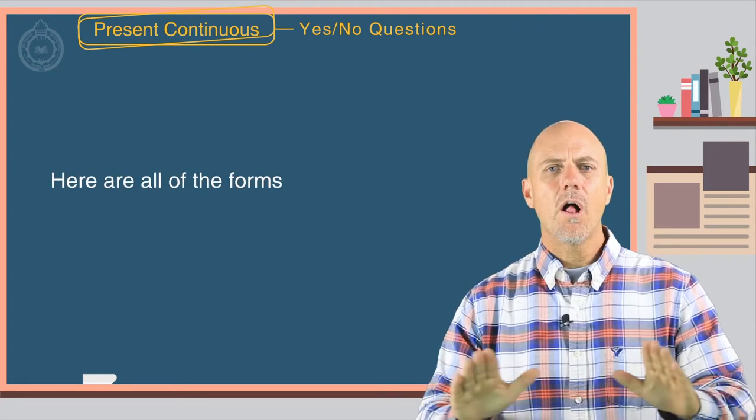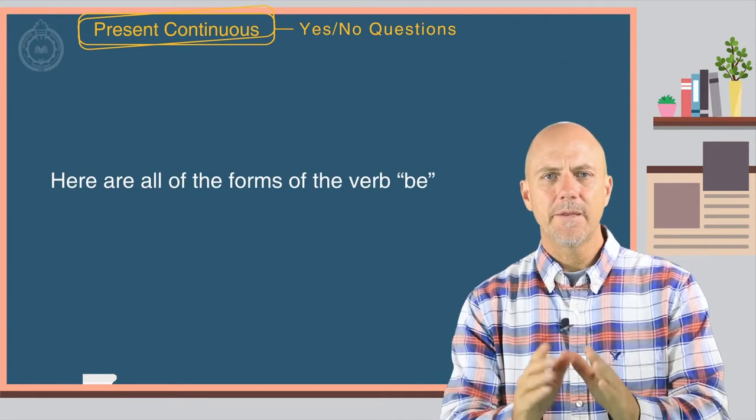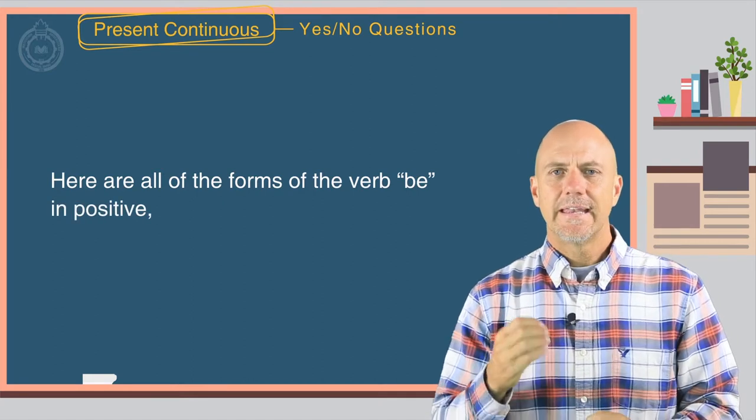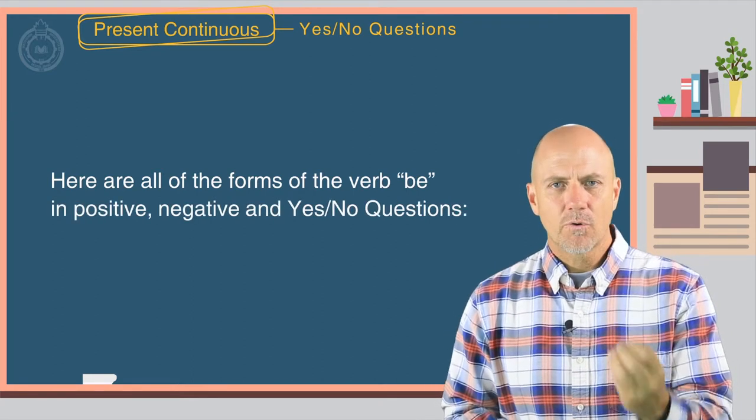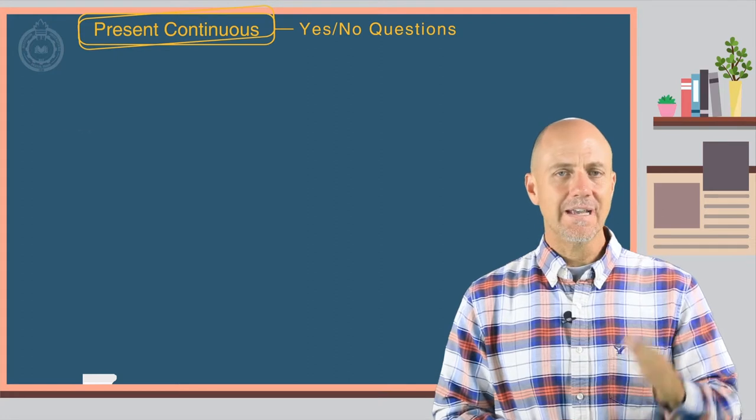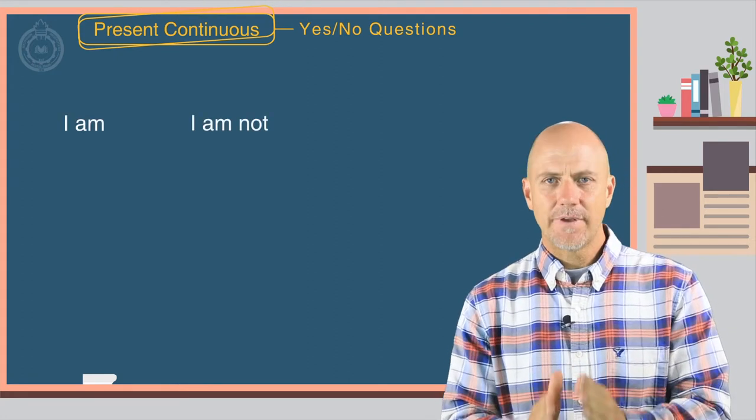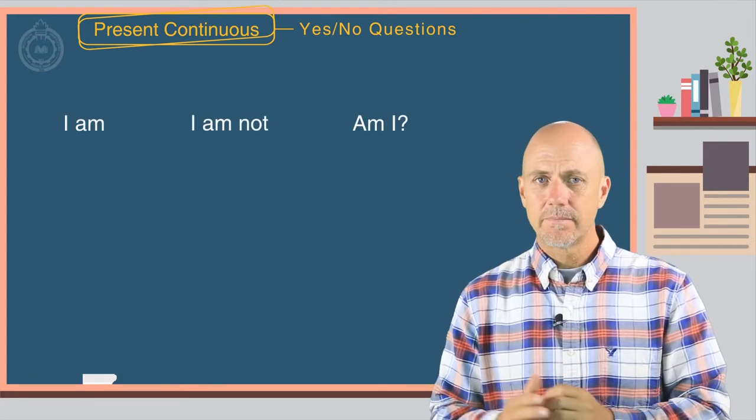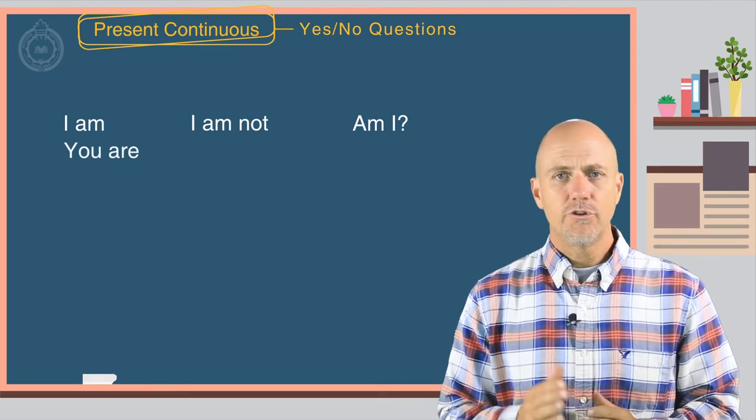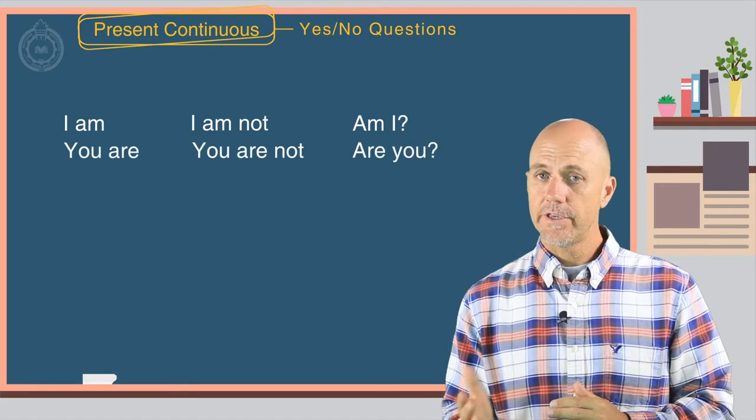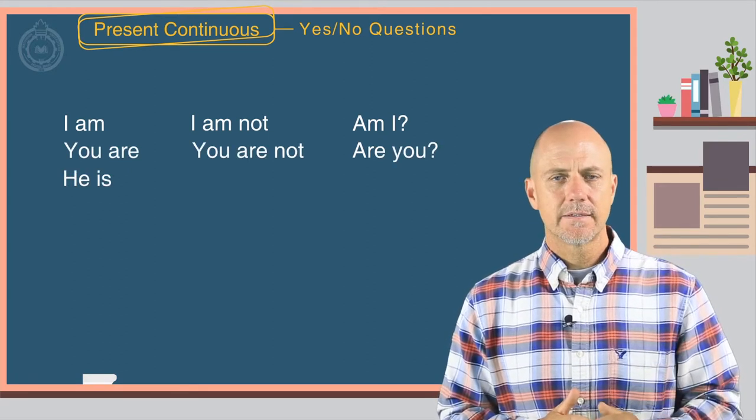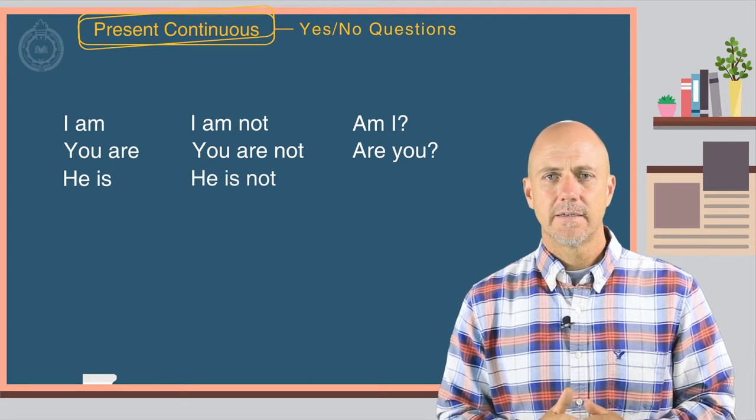Here are all of the forms of the verb be in positive, negative, and yes-no questions. I am, I am not, am I? You are, you are not, are you? He is, he is not, is he?